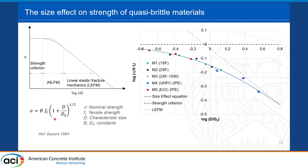Applying this equation to our specimens, we find that all five materials lie well on the expected curve and all show a clear size effect, but at different levels. ECC, shown in red, showed the least size effect compared to the others, while the UHPC mixes showed a very clear size effect.